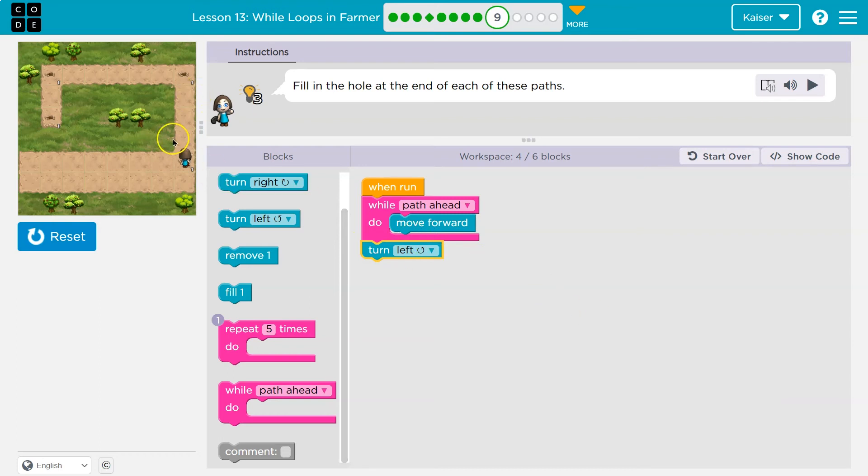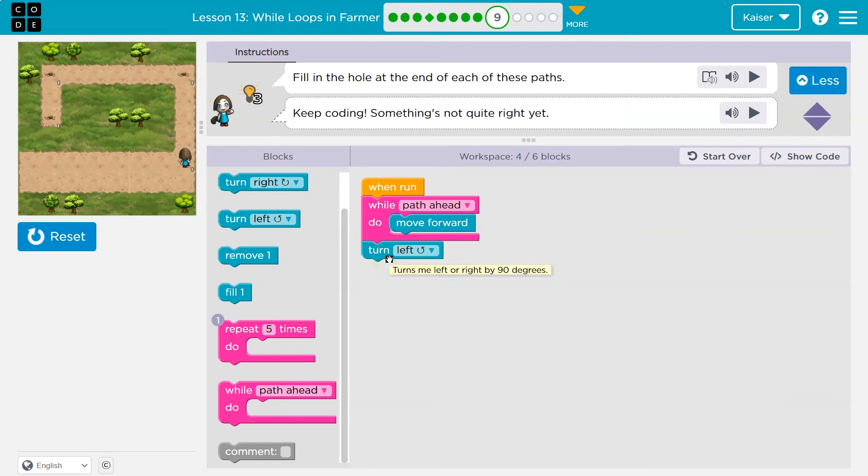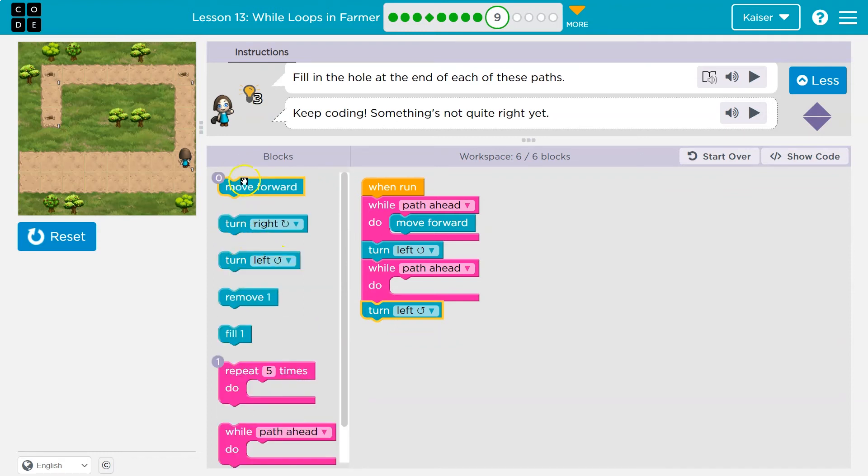All right. But that's only going to be obviously one side. We need to keep moving forward. So, well, that worked for one side. Why don't I do as long as there's path ahead? Because again, I won't need to count then. She'll just detect once we're at the corner, we can turn left again and we want to move forward.